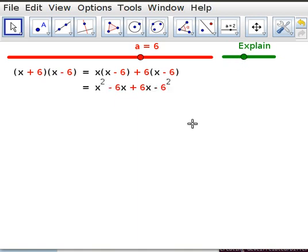And if you expand this multiplication, you get x squared minus 6x. And if you expand this multiplication, you get plus 6x minus 6 squared. And when you simplify and you take your minus 6x and your plus 6x, you get zero x's, which just leaves you with x squared minus 6 squared.